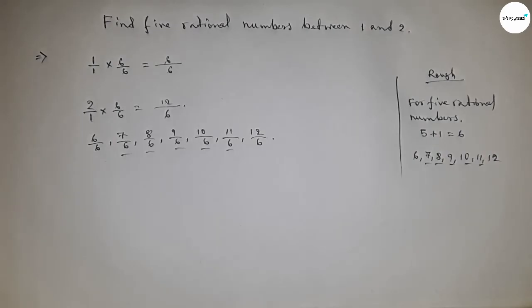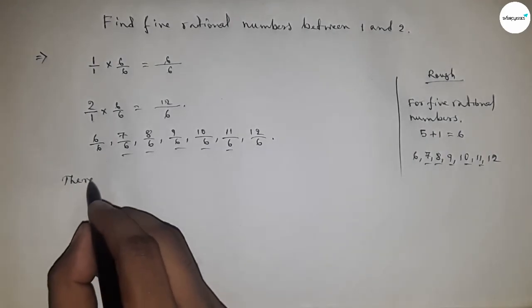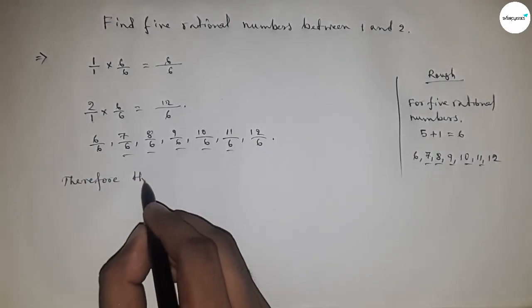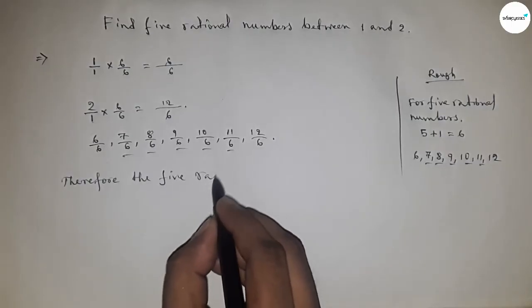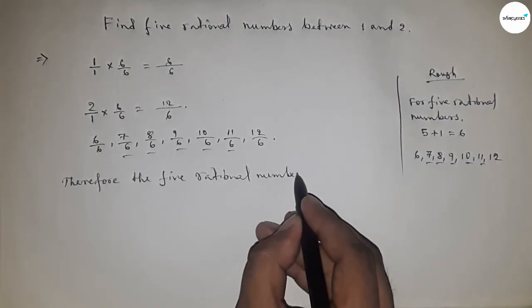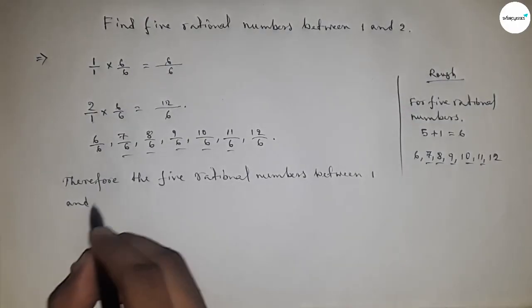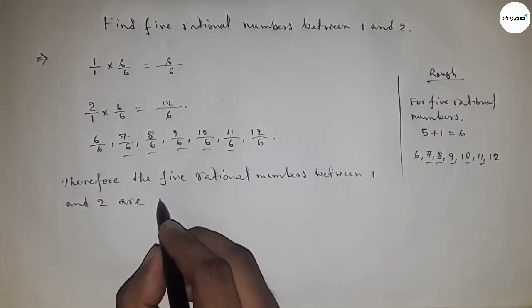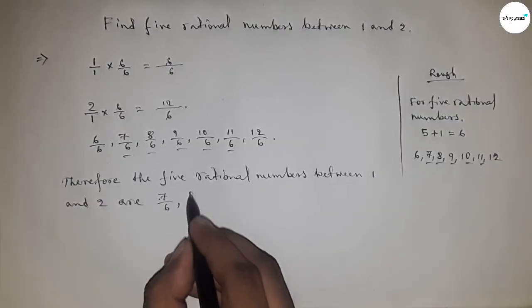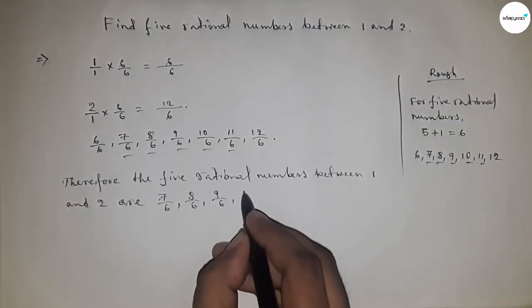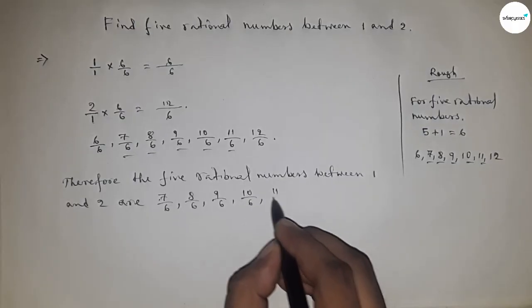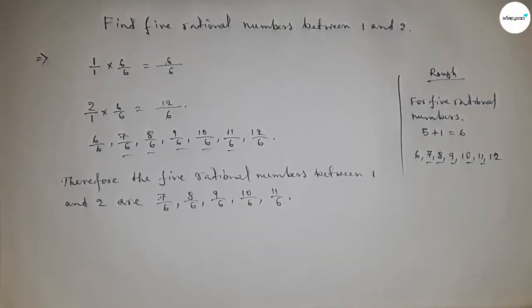got 5 rational numbers. Therefore, the 5 rational numbers between 1 and 2 are: 7 by 6, 8 by 6, 9 by 6, 10 by 6, and last one 11 by 6. So this is the process to